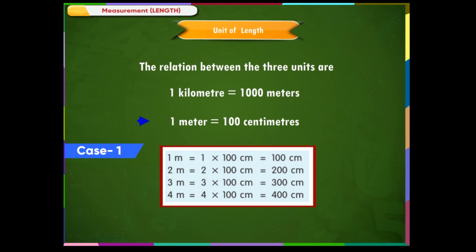Case 1: To convert meters into centimeters, we simply multiply the number of meters by 100, because 1 meter is equal to 100 centimeters. As shown on the screen: 1 m = 100 cm, 2 m = 200 cm, 3 m = 300 cm.